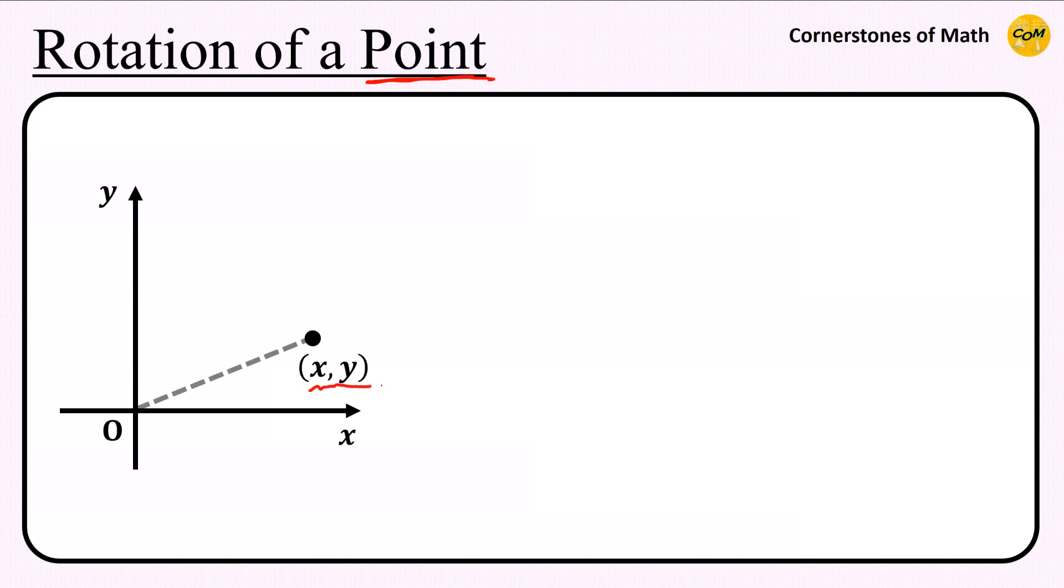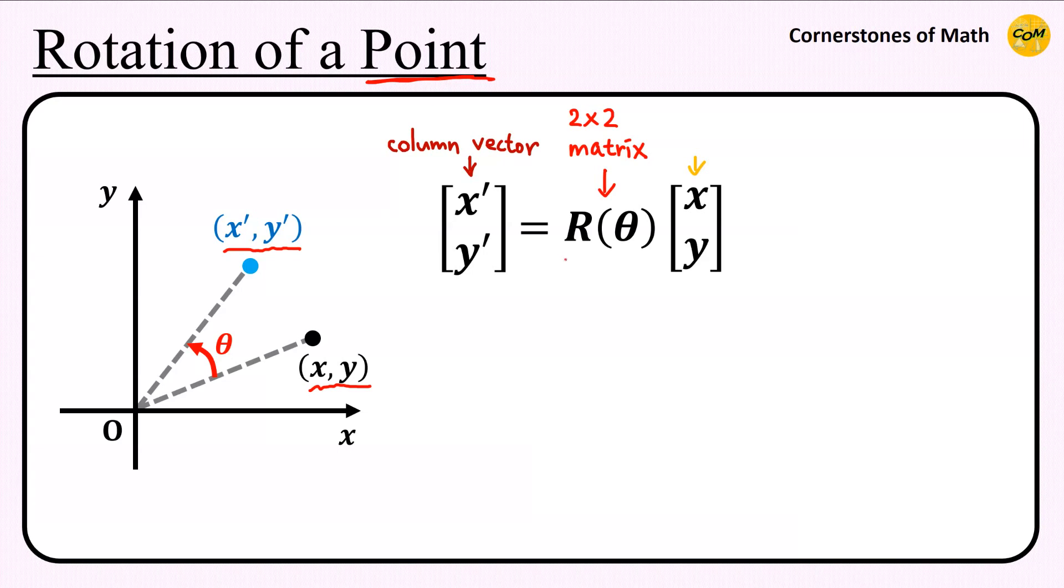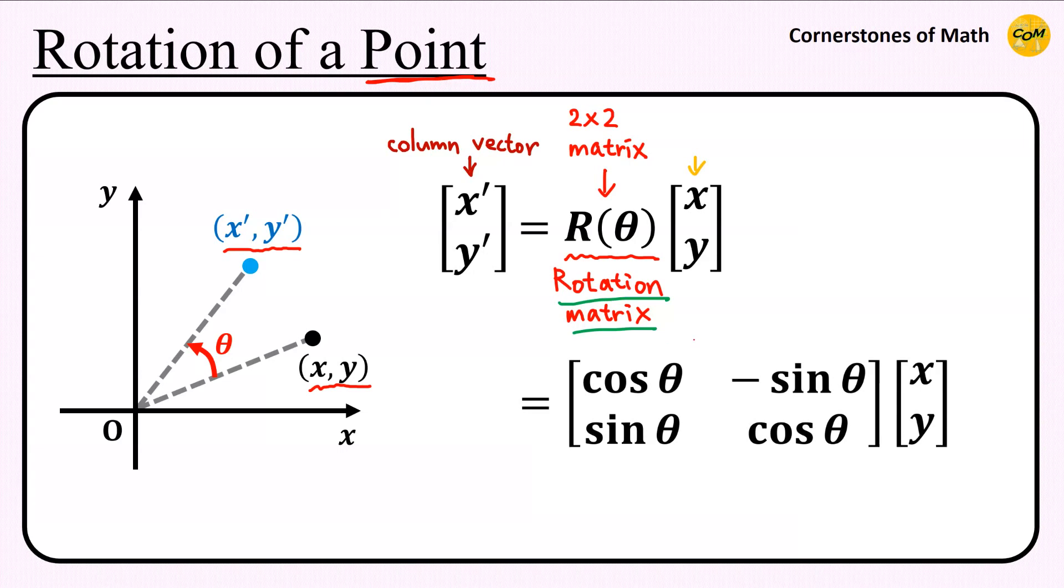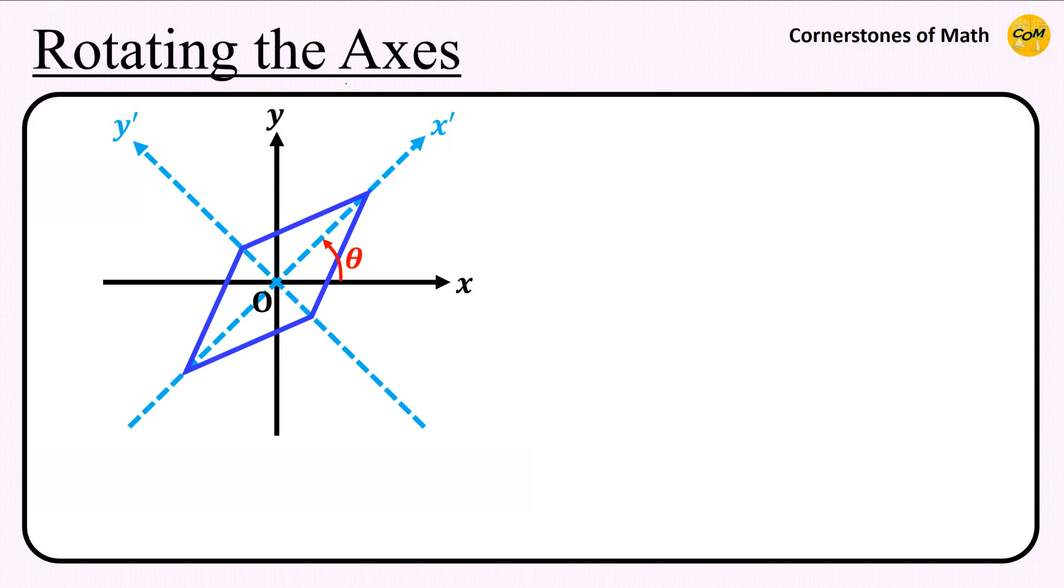So, we have a point (x, y), and suppose that if we rotate this point by angle theta counterclockwise, it moves to point x prime comma y prime. Then, the rotated point x prime comma y prime, in a column vector form, is given as column vector [x, y] multiplied by a 2 by 2 matrix R(theta), where this R(theta) is called the rotation matrix. It is known that R(theta) is given as the matrix [cosine theta, minus sine theta; sine theta, cosine theta]. But this is the formula for the rotation of a point.